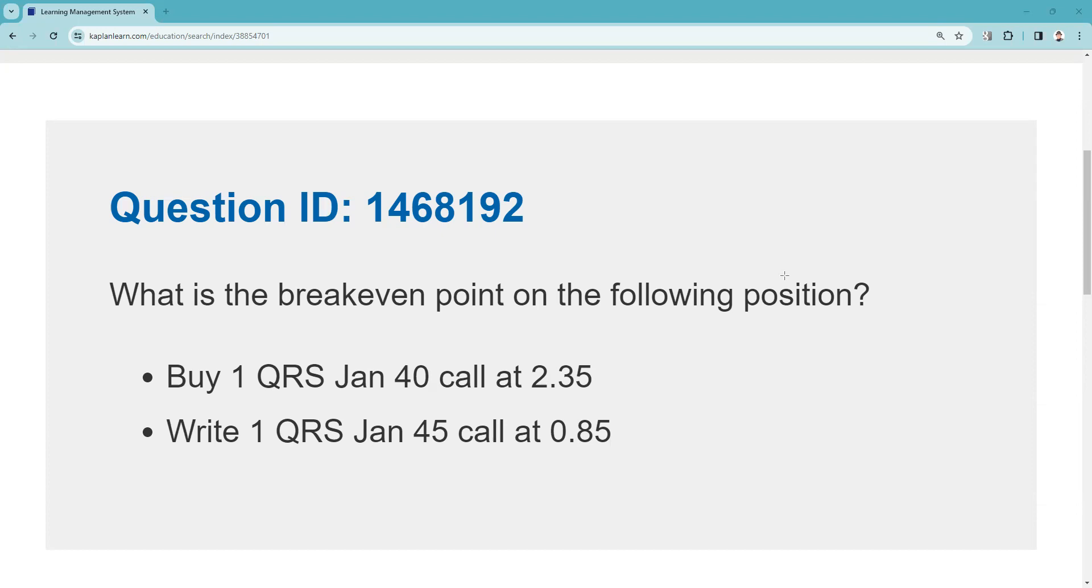What is the breakeven point on the following position? Buy one QRS January 40 call at 2.35, that's dollars out, and write one QRS January 45 call at 0.85. So you should have been able to recognize this as a spread.